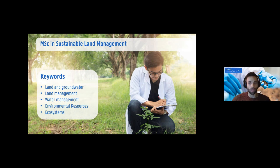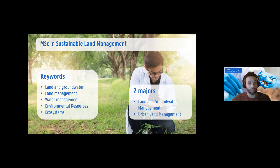The second program is the Master in Sustainable Land Management, which aims at integrating technologies to manage land, water, and other environmental resources to meet human needs and safeguard future livelihoods and ecosystems. Population pressures, severe degradation, pollution, and desertification are affecting all ecosystems worldwide. This program also has two majors: Land and Groundwater Management, and Urban Land Management.